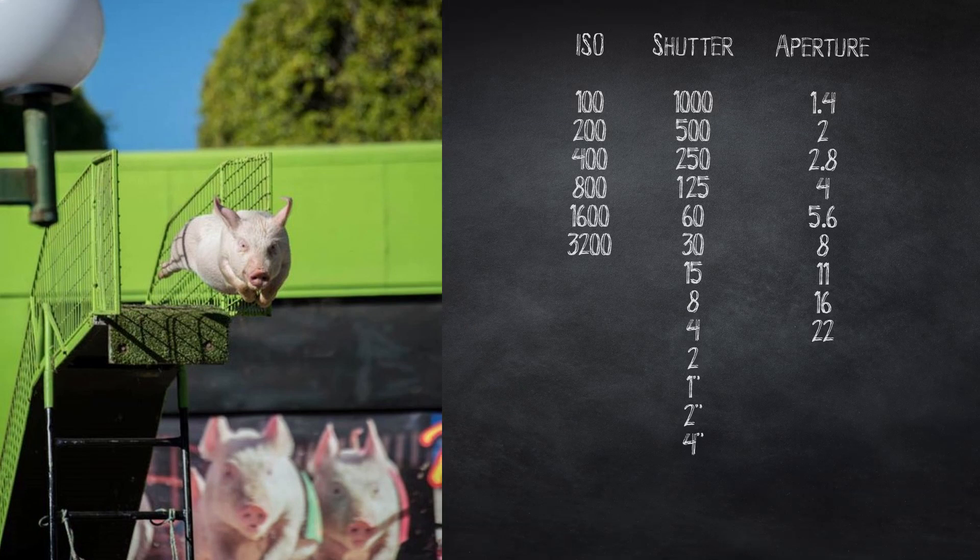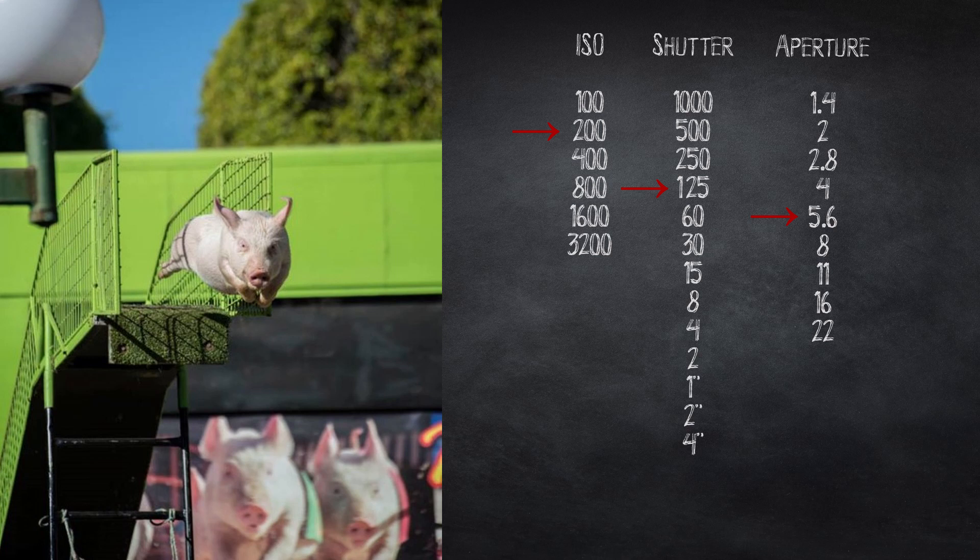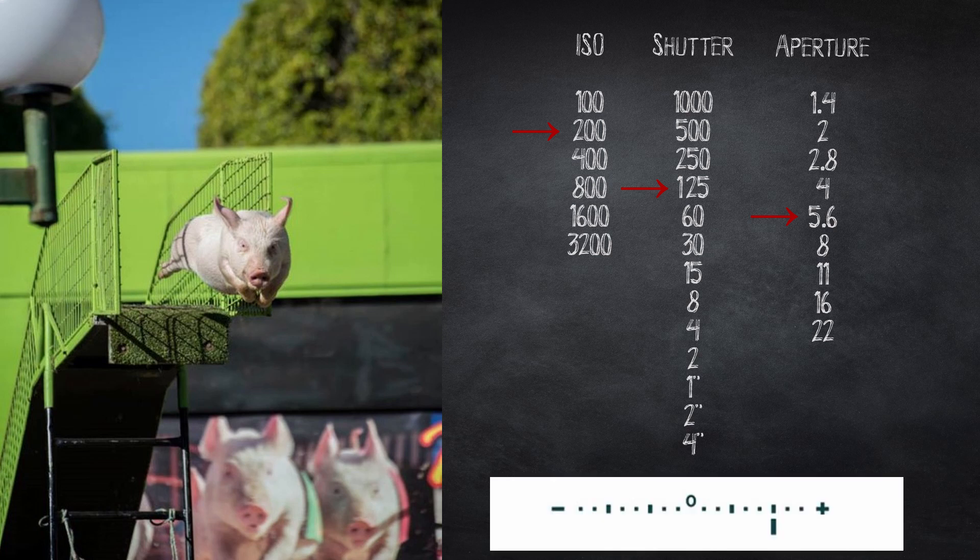So you turn on the camera and these just happen to be the settings from a previous photo you took. You look through the camera and see the following light meter reading. This shows us we're two stops overexposed. Now we have three ways to bring down the exposure by two stops: by speeding up the shutter, by closing down the aperture, or by decreasing the ISO. So what do we do?